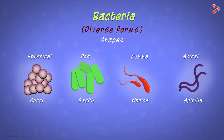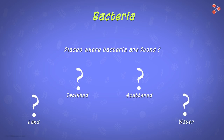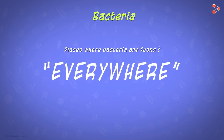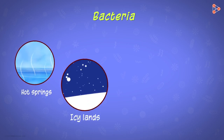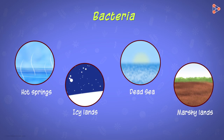There are numerous other ways of classifying bacteria. However, we restrict ourselves to this one simple type based on shapes. Now, where do you think these bacteria will be found — in isolated places or scattered at specific points? Will they be found only on land, only in water, or both? Well, there is a single word which describes their presence, and that word is everywhere. There is no single place on this earth where you won't find bacteria — may it be the hot springs, the ice-clad regions, the salty Dead Sea, or even the marshy lands. They are present everywhere.